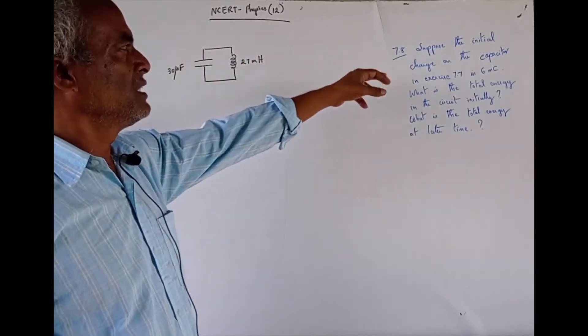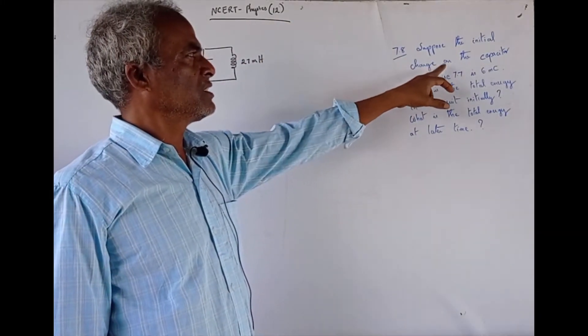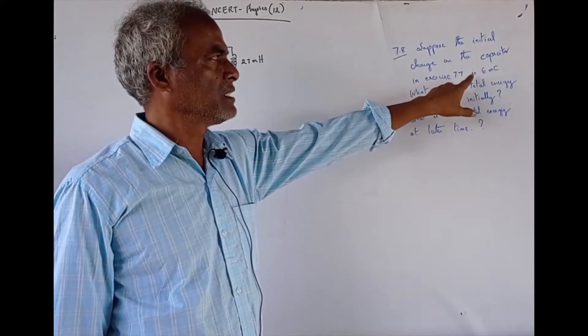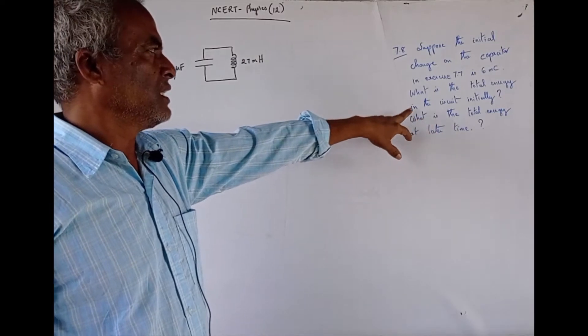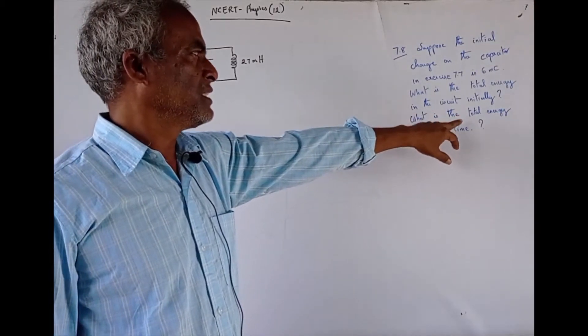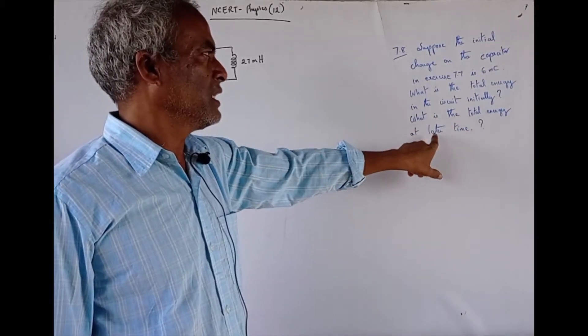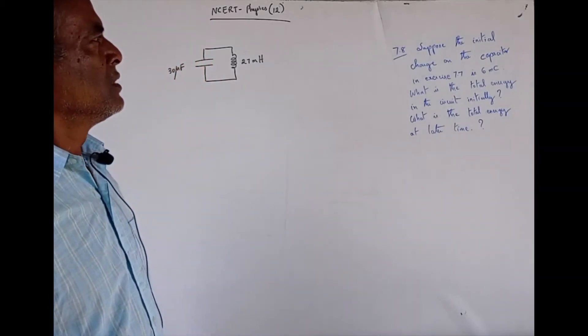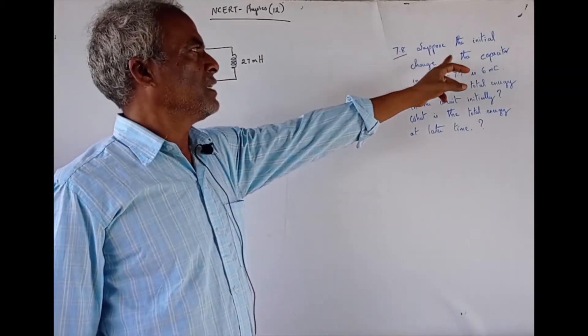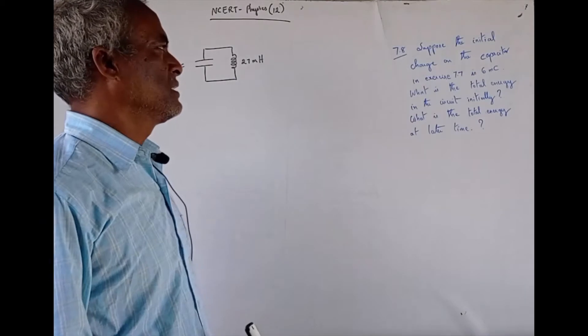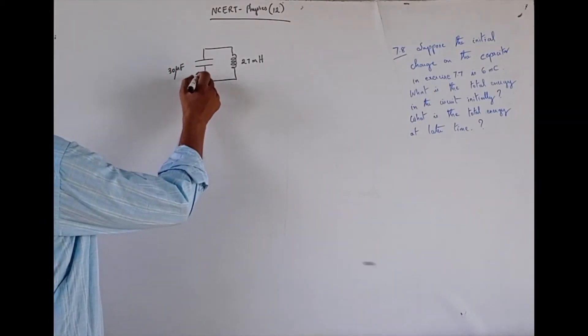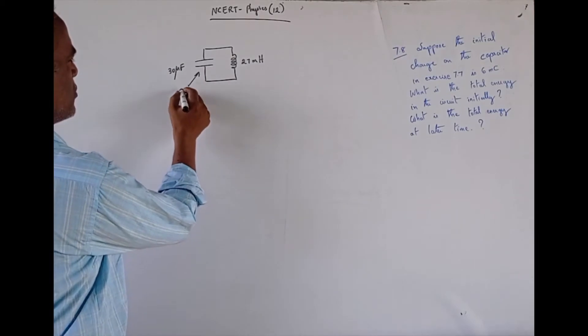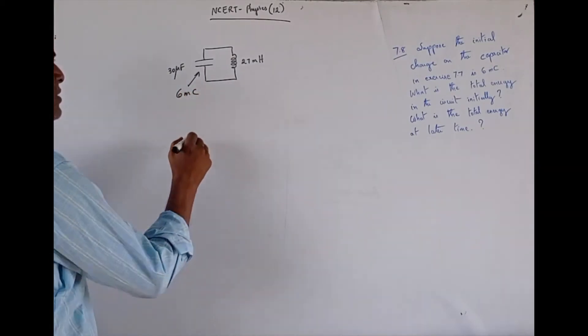So, the question is, suppose the initial charge on the capacitor in exercise 7.7 is 6 millicoulomb, what is the total energy in the circuit initially, what is the total energy at later time? So, it is given that suppose the initial charge on the capacitor in exercise 7 is 6 millicoulomb. So, initially the charge here is 6 millicoulomb, okay, this is given.